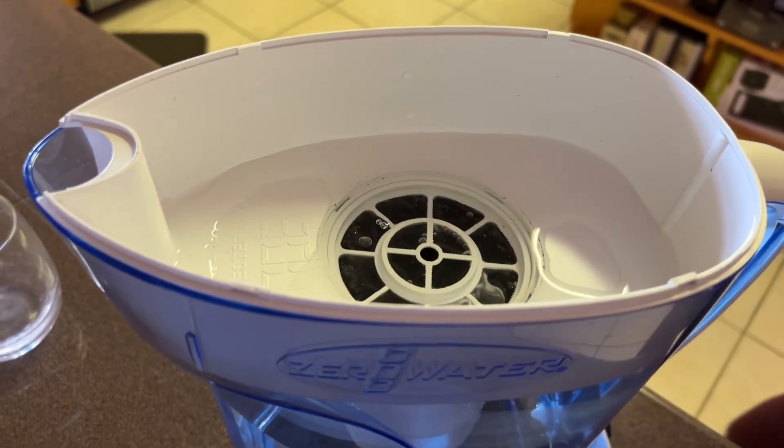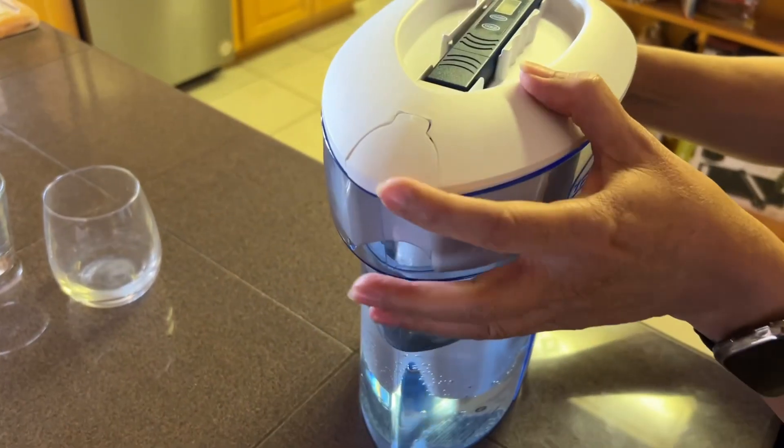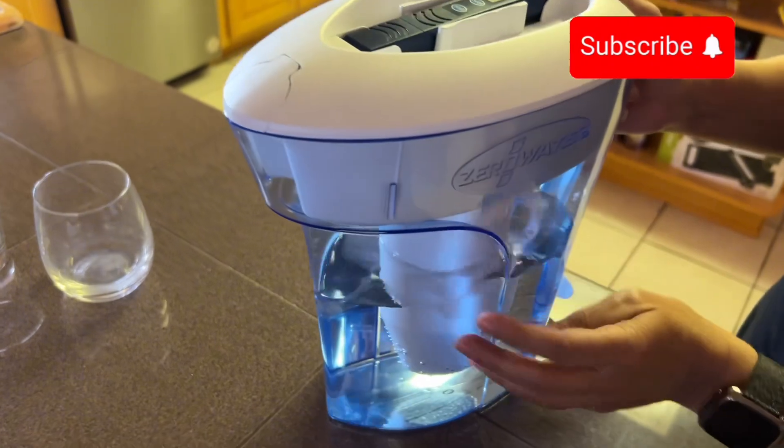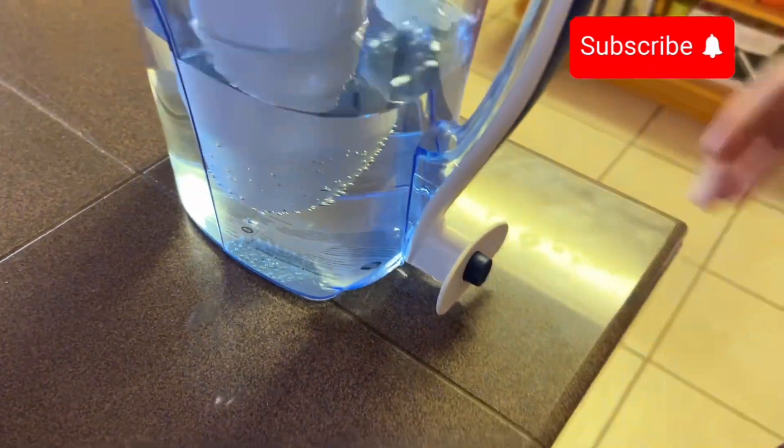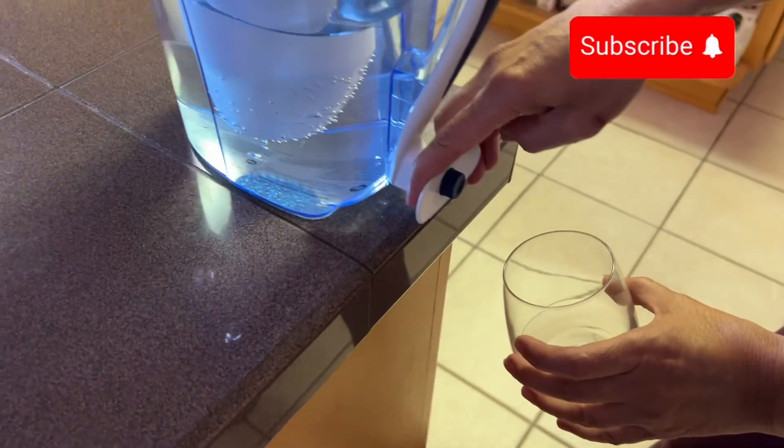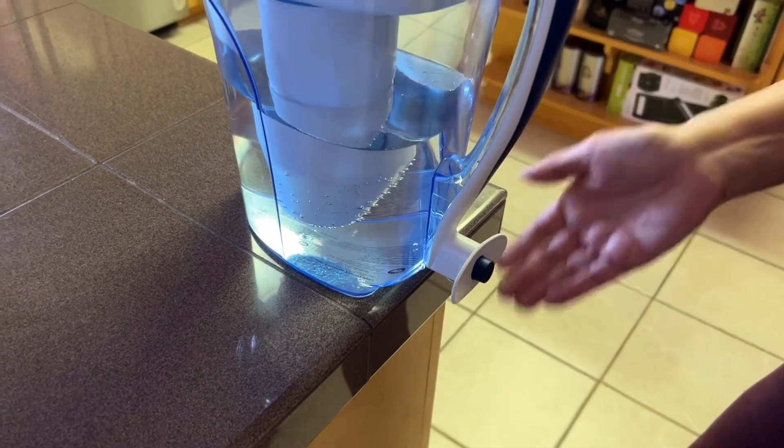Then it just filters through to the bottom. Not only does it have a spout on the top where the water comes out, but it also has a spout on the bottom to make it very convenient for you to slide your pitcher to the edge of the counter, pour your water out, and it doesn't drip.